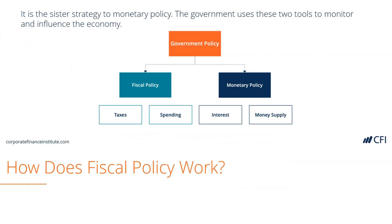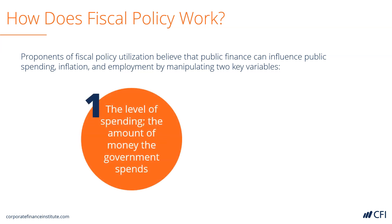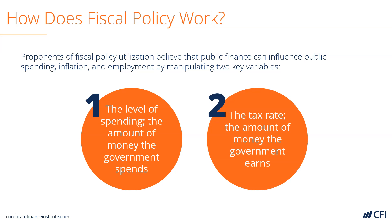Let's look at how fiscal policy works. Supporters of fiscal policy believe that the government can affect public spending, inflation, and employment by manipulating two key variables. The first variable is the level of spending, which is the amount of money that the government spends. The second variable is the tax rate, which is the amount of money that the government earns. Essentially, the government affects inflation and employment by manipulating its own cash inflows and outflows.